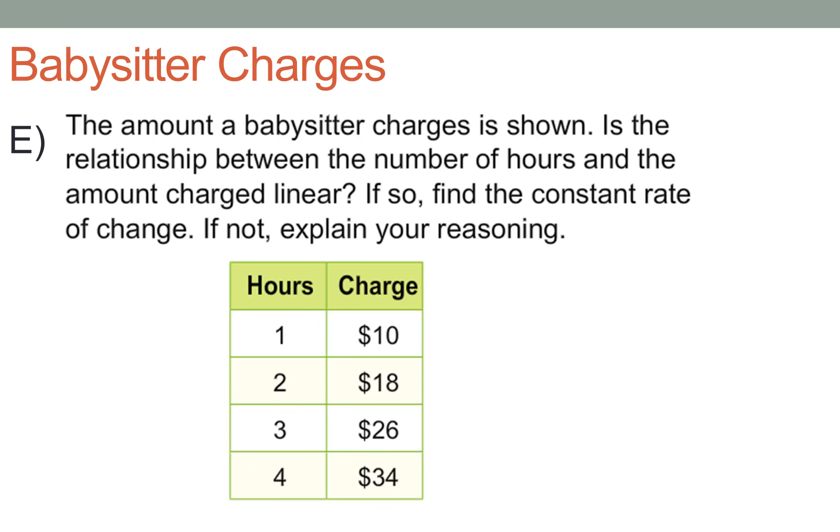Let's look at example E. There's going to be nothing actually shown on this slide except for what you see right now. So the amount a babysitter charges is shown below in the table. Is the relationship between the number of hours and the amount charged linear? You know what? We got to check. And if so, find the constant rate of change. If not, explain your reasoning. Boom!